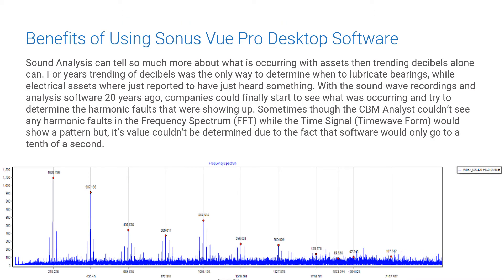Sound analysis can tell so much more about what is occurring with assets than trending decibels alone. For years, trending in decibels was the only way to determine when to lubricate a bearing, while electrical assets were just reported as having heard something. With sound wave recordings and analysis software available about 20 years ago, companies could finally start to see what was occurring and try to determine the harmonic faults that were showing up.